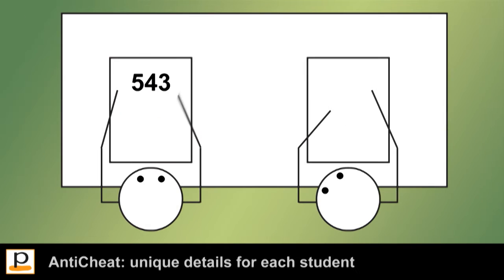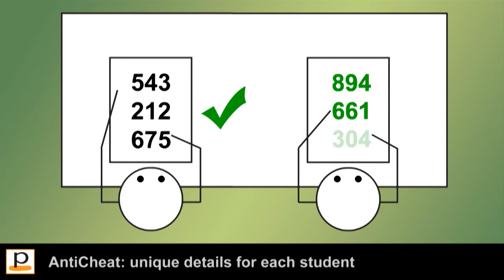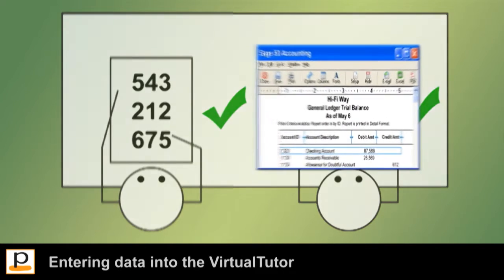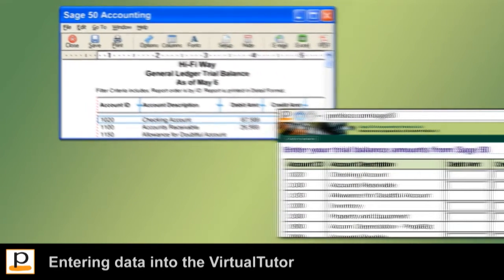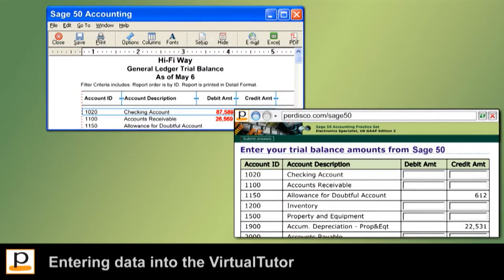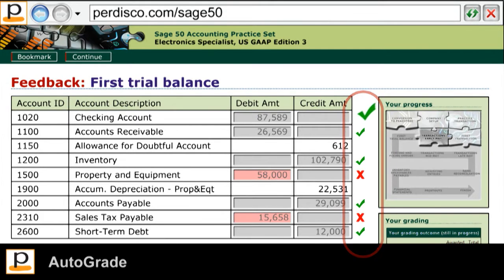Since students are unable to copy each other's work, they're forced to thoroughly practice and understand the skills essential to accounting in Sage50. Once students have recorded the given transactions, they generate a trial balance and enter the amounts provided by Sage50 into the virtual tutor. When they submit their answers, each student's work is automatically graded based on the unique transaction list they were given.